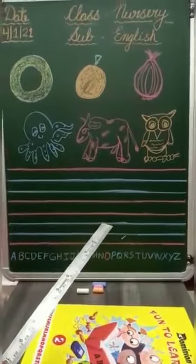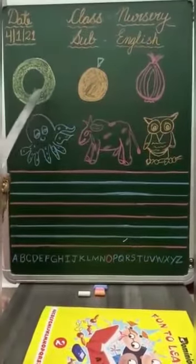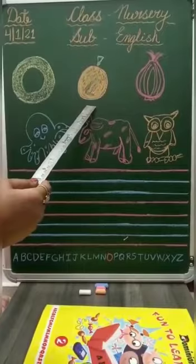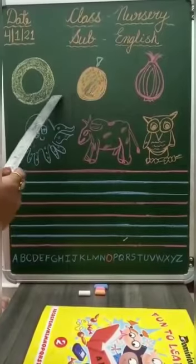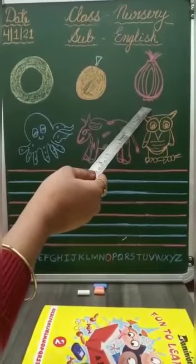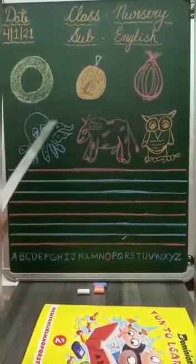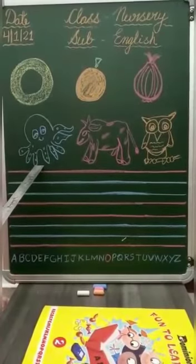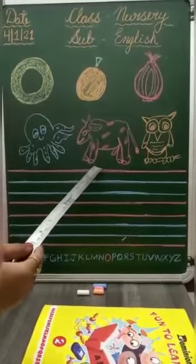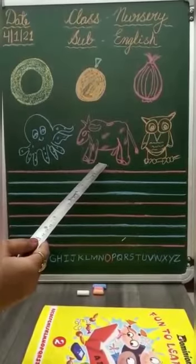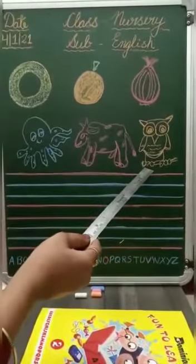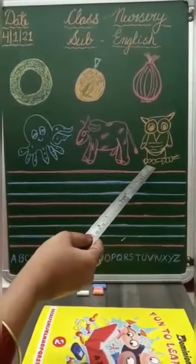Kids, repeat with ma'am. O for orange, O, O, orange. O for onion, O, O, onion. O for octopus, O, O, octopus. O for ox, O, O, ox. O for owl, O, O, owl.